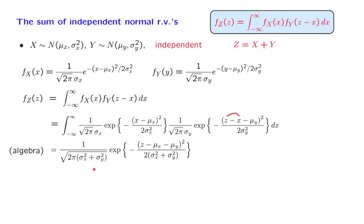What is this form? Well, it's exponential of minus Z minus something squared, divided by a constant. And we recognize that this is the form of a normal random variable. It's a normal random variable whose mean is given by this term here, μ_X plus μ_Y. And the variance of that normal random variable is that constant that appears next to the factor of 2 in the denominator.